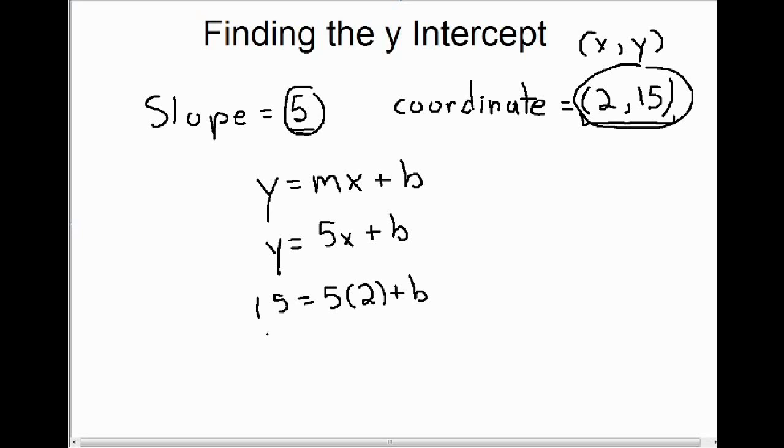And now it's just a matter of simplifying, 5 times 2 is 10. We bring that positive 10 over to the other side to get b by itself. And we find that b is 5 as well. Just a coincidence that b and the slope here happen to be the same.